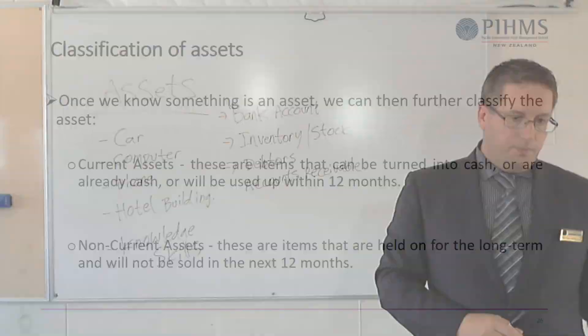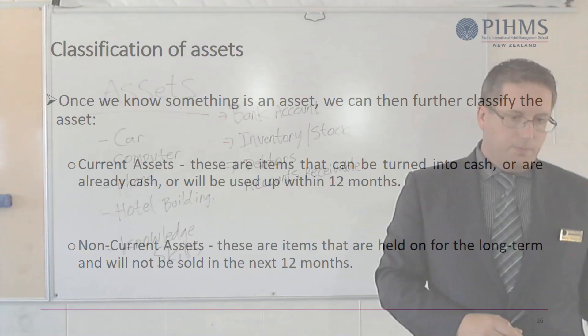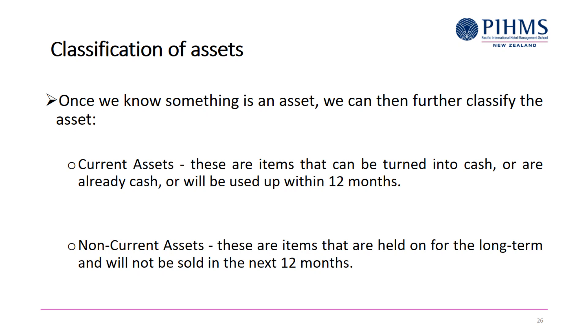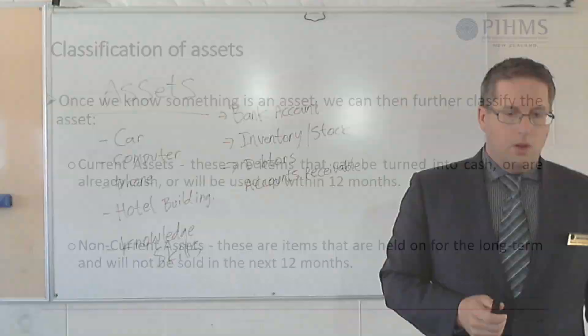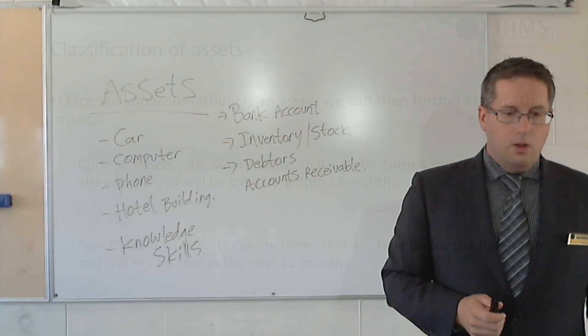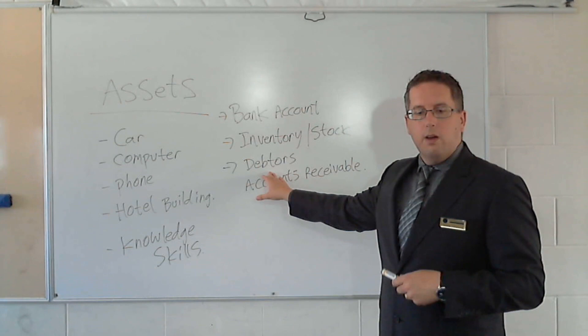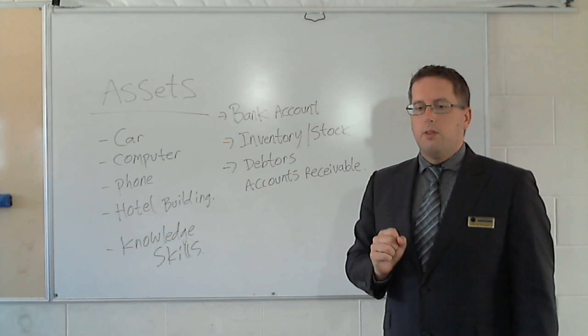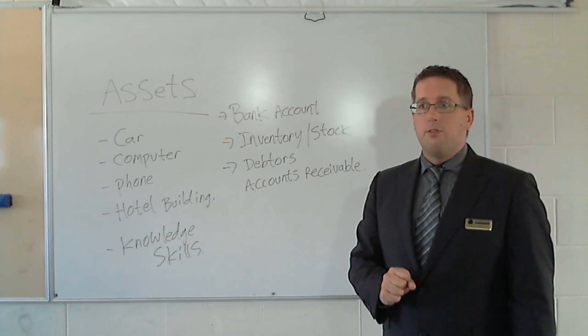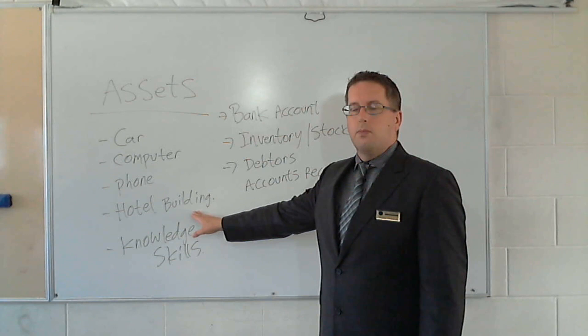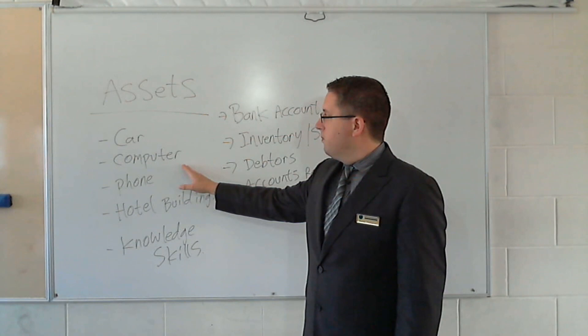The final category is non-current assets — items held for the long term that won't be sold within the next 12 months. Some things are short-term, but some we want to keep for a long time. If we're going to hold something for longer than 12 months, it's a non-current asset. A hotel building will be around for a long time, a car we'll use for a long time, and so will computers, phones, equipment, furniture, fittings, and long-term investments.